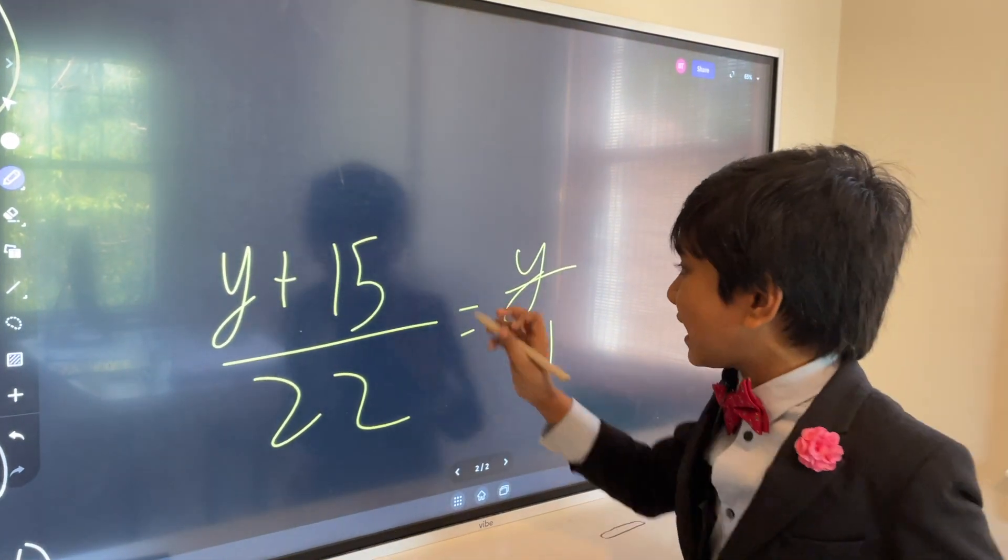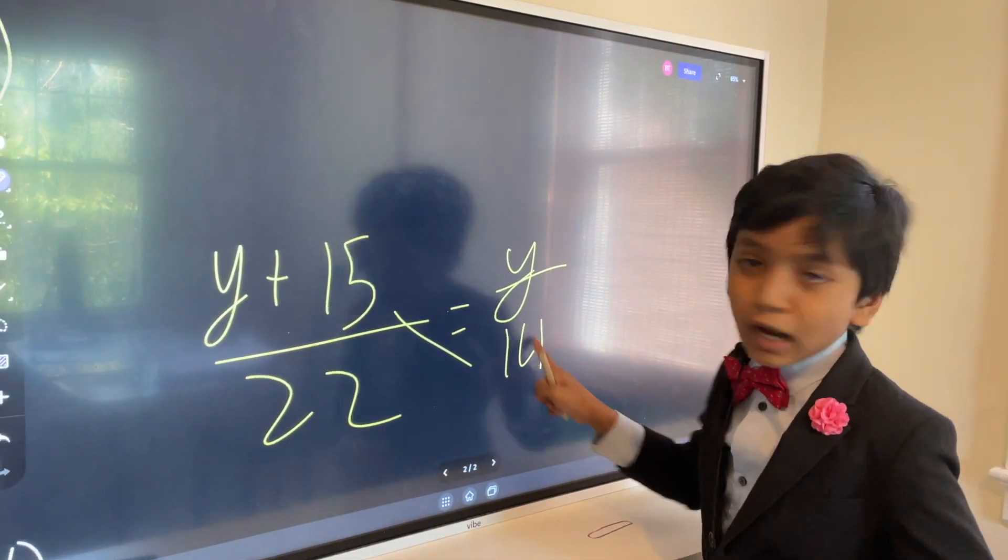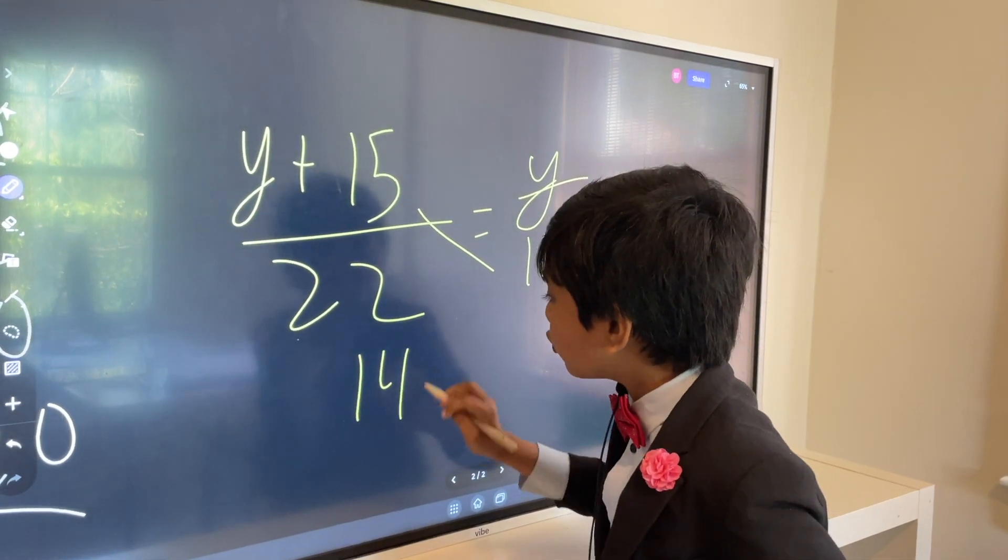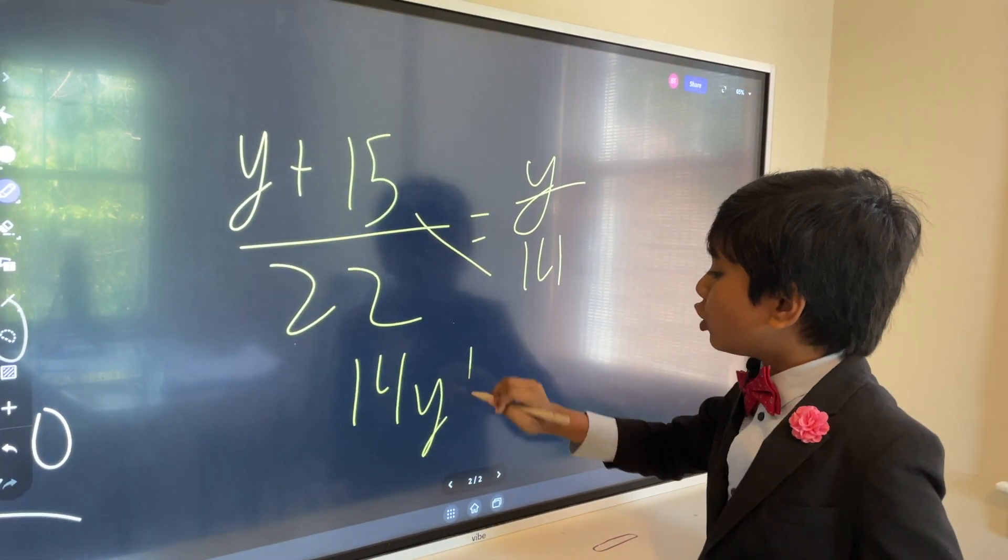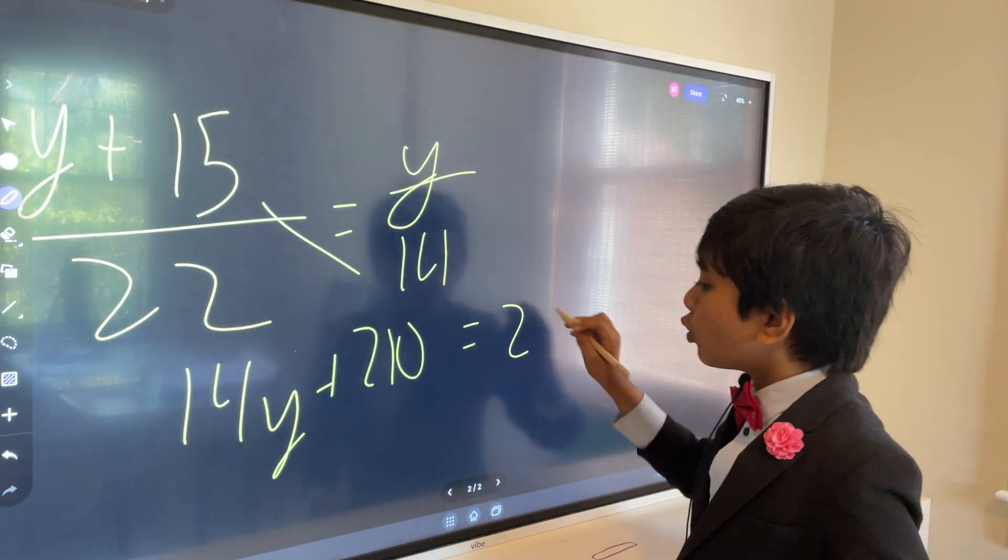Now we do the cross multiplication. What is y plus 15 times 14? Can anybody tell me? No! So, y times 14 is 14y. 15 times 14 is 210. Equals to 22y. Alright!